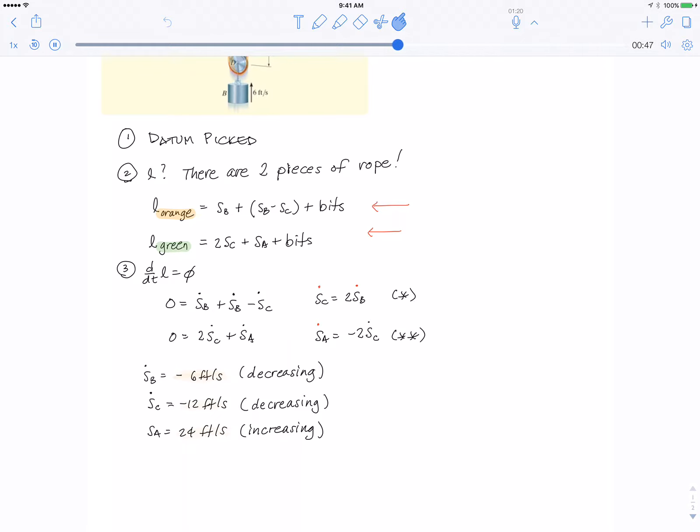You're given that SB is minus 6 feet per second because it's decreasing going up. You just put that in and you can get SC is minus 12 feet per second. Then finally you can get SA.